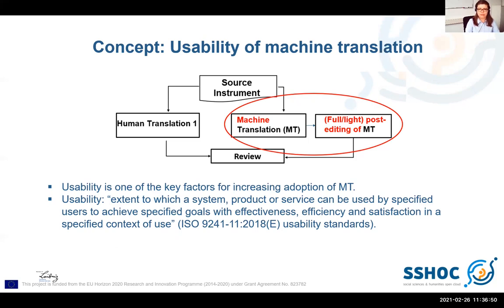Usability can be defined as follows: it is the extent to which a system, product or service can be used by specified users to achieve specified goals with effectiveness, efficiency and satisfaction in a specified context of use. Thus, usability will be measured by the three dimensions: effectiveness, efficiency and satisfaction.